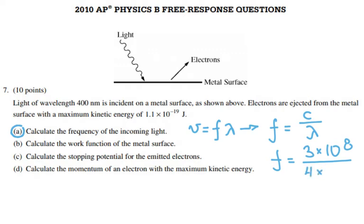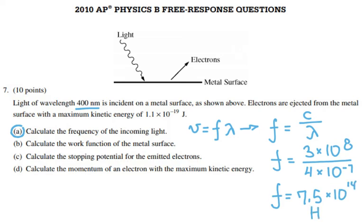Converting 400 nanometers: 400×10⁻⁹ equals 4×10⁻⁷ meters. So the frequency equals 7.5×10¹⁴ hertz.